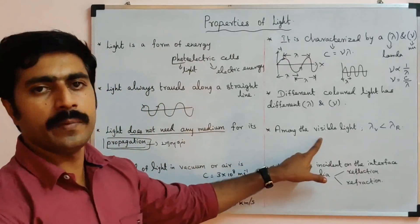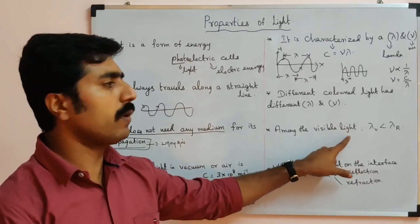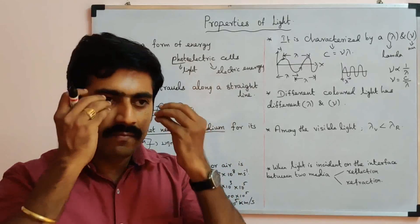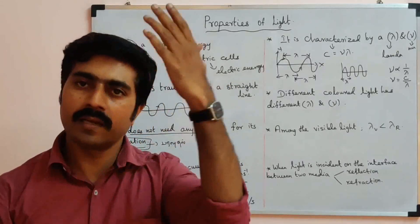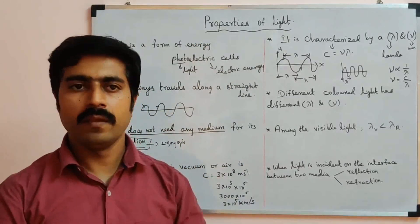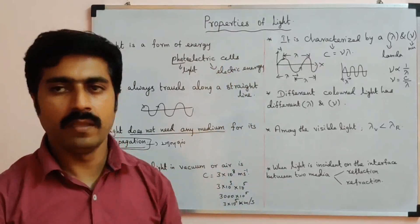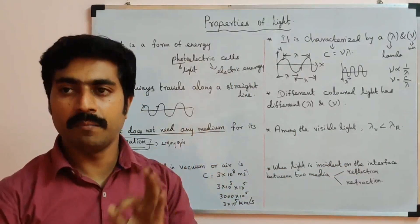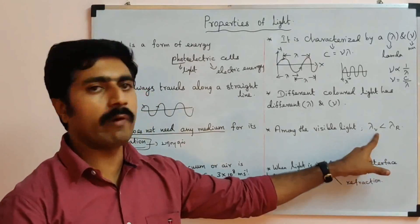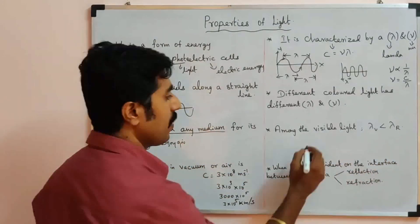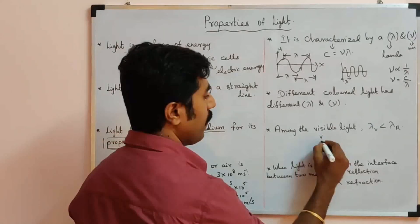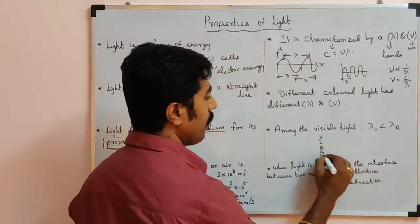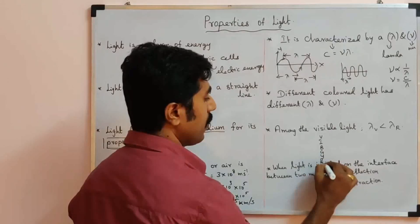Visible light is the light that can be seen by the human eye. Among the visible colors, the first is violet and the last is red: violet, indigo, blue, green, yellow, orange, red.